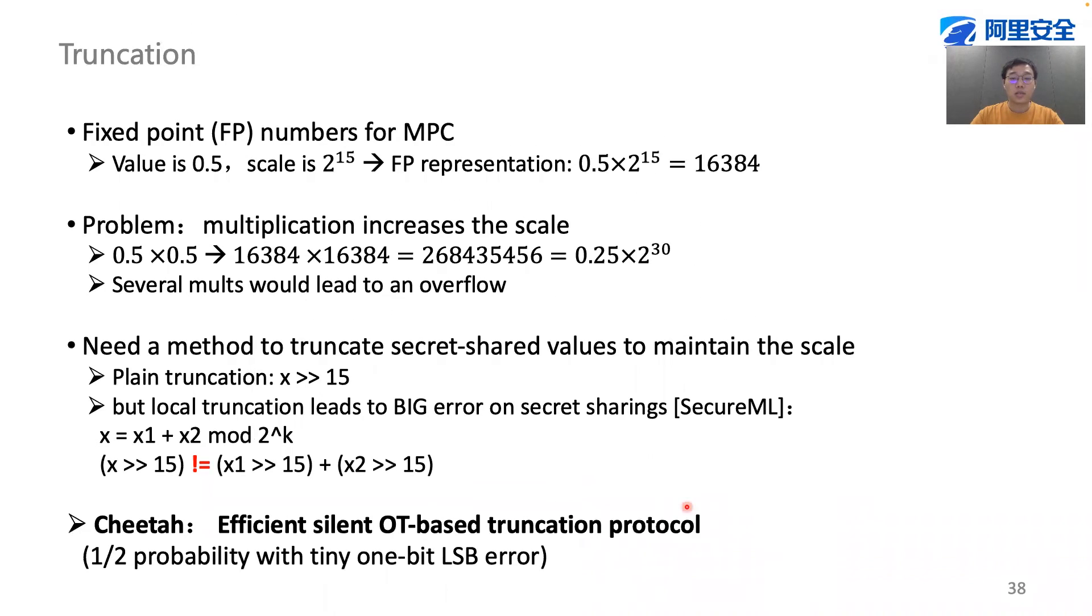Truncation is also a very heavy operation in multi-party computation of fixed-point numbers. We propose a more efficient truncation protocol based on silent OT, but there could be a tiny one-bit error in the LSB. This error does not affect the neural network inference result as we have verified in the paper.